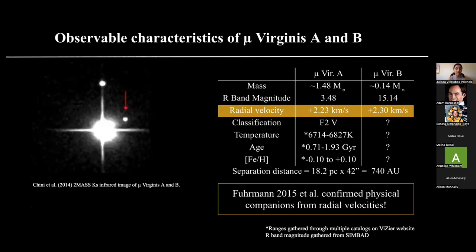Here is a slide about the characteristics of Mu Virginis A and B. If we look at the image on the left, this was taken by an infrared telescope. The brighter primary star Mu Virginis A is the bigger star, and the companion Mu Virginis B is depicted by the red arrow. Something I want to highlight is that their radial velocities are very very similar — this means they are traveling in the same direction at roughly the same speed. The 2015 paper has confirmed they are companions based on their radial velocity. For Mu Virginis A, we know very much about it because it is so bright; but for Mu Virginis B, we don't have that much information, and that is where spectral analysis comes in.